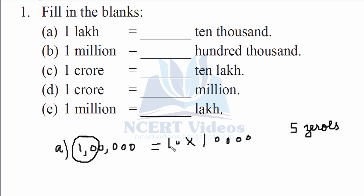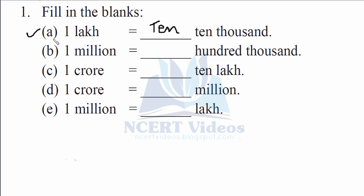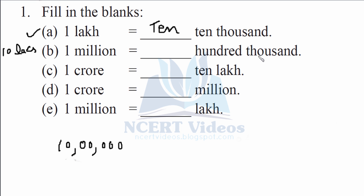So that gives you 10 ten-thousands. The second part is 1 million. One important thing to note here is that 1 million equals 10 lakhs. So let's write 10 lakhs first — this makes your 10 lakhs.